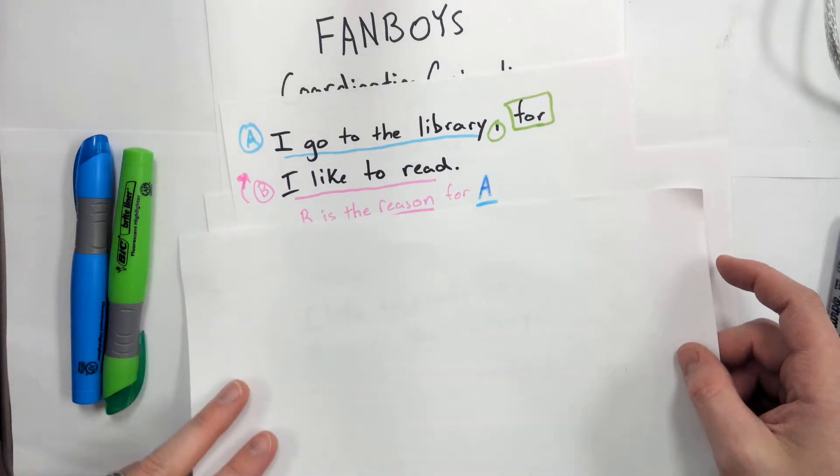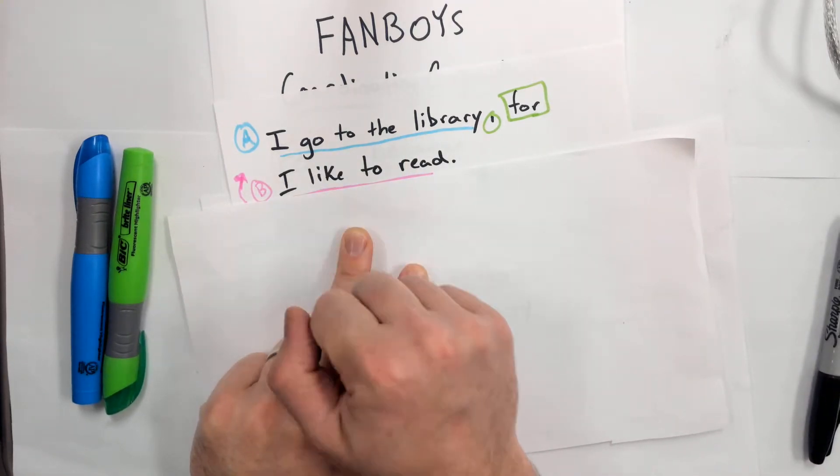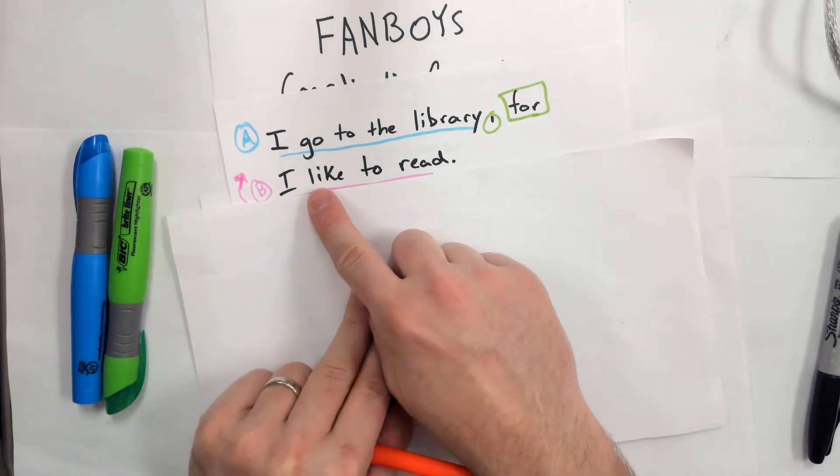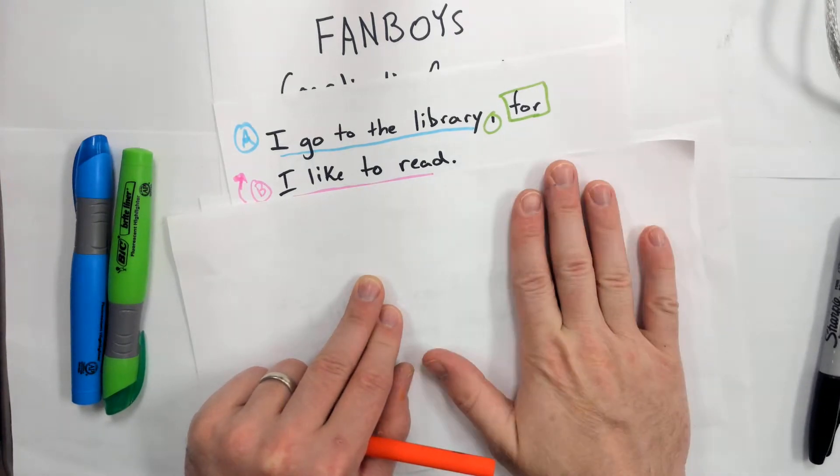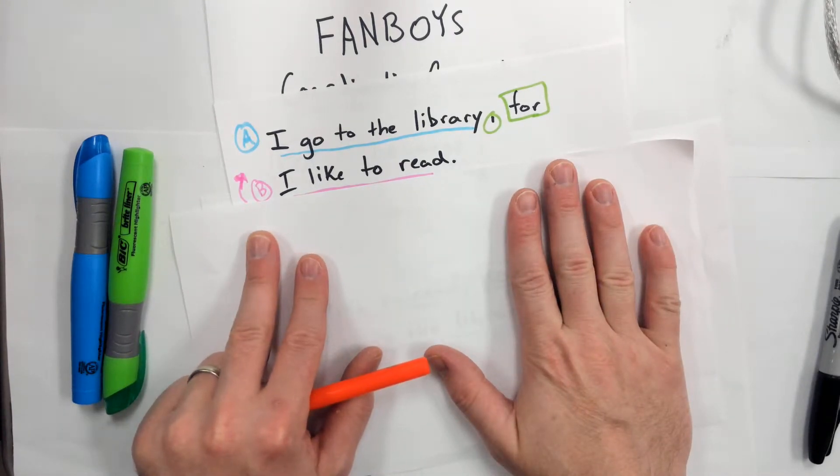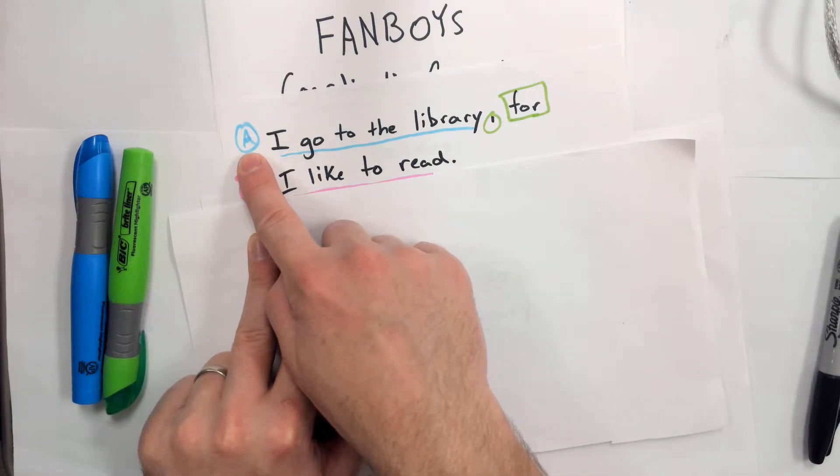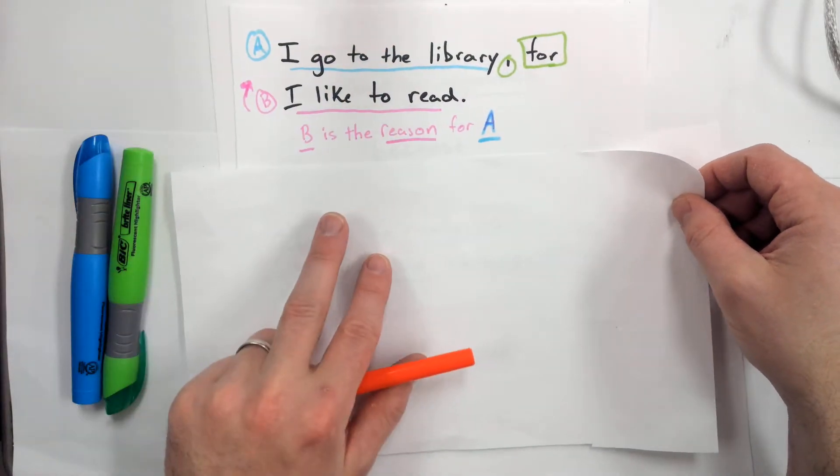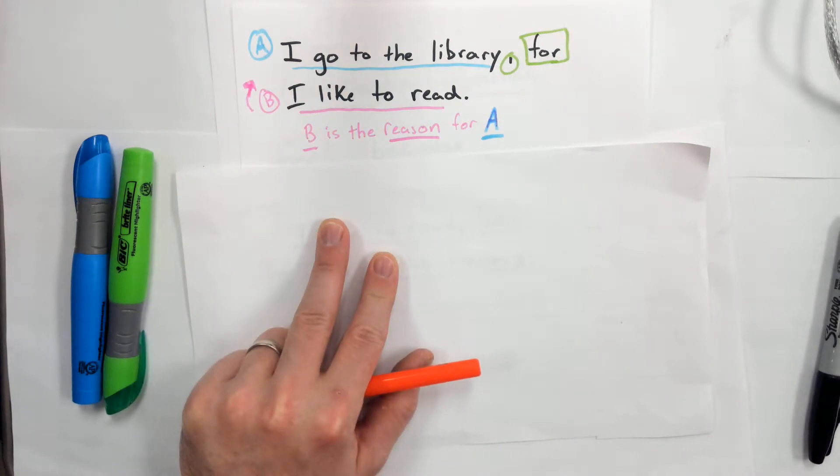Let's look at a sentence: 'I go to the library, for I like to read.' Now what this is telling us is that independent clause B is the reason independent clause A happens. So B is the reason for A happening.